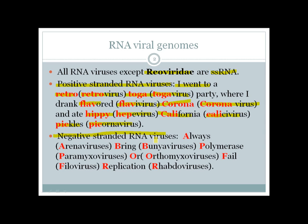For negative-strand RNA viruses, always bring polymerase to convert the negative strand into an RNA strand — if you cannot do that, you will fail replication. So: Arenavirus, Bunyavirus, Paramyxovirus, Orthomyxovirus, Filovirus, and Rhabdovirus are the negative-stranded RNA viruses.